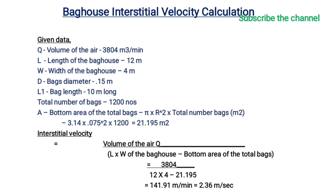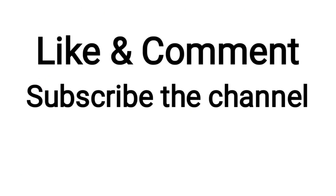Next, based on the above given data, we calculate the interstitial velocity. Interstitial velocity equals the volume of the air divided by the length and width of the bag house minus the bottom area of the total bags. Based on the data and formula, the interstitial velocity is 141.91 meters per minute or 2.36 meters per second. Hope you understand what interstitial velocity is and how to calculate it. Thanks for watching — subscribe to the channel for more videos.